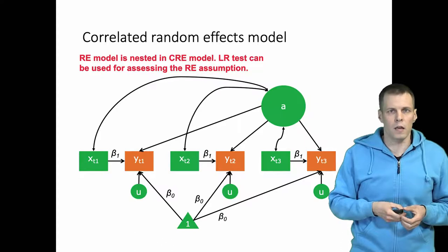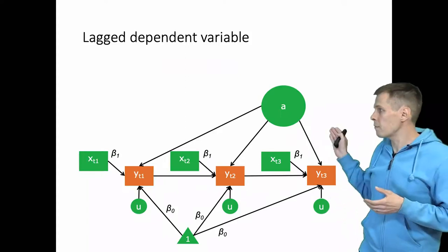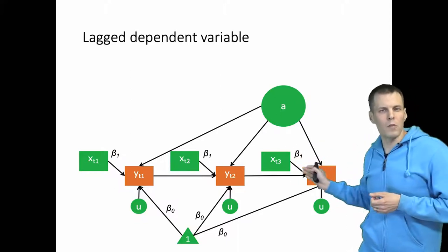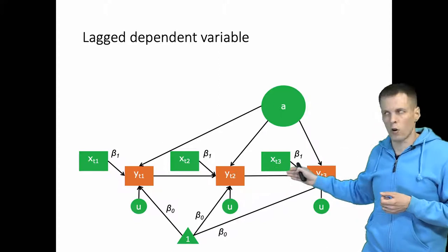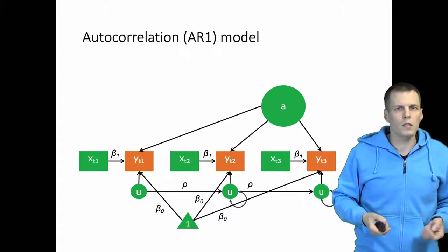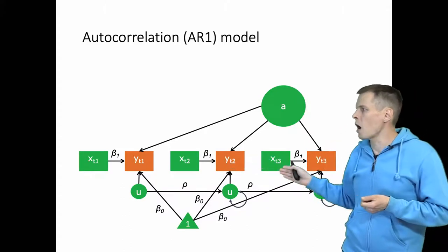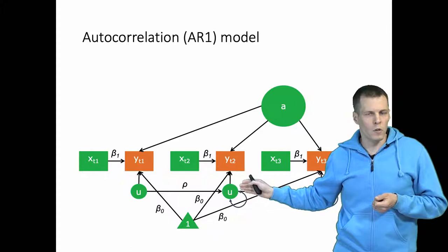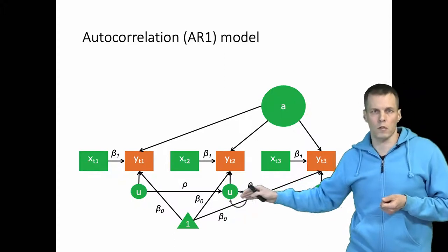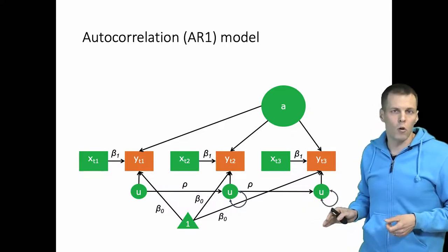We can also do more advanced models. For example, we can include lagged dependent variables, giving us a dynamic panel model where the Y's affect each other over time, the X's affect the Y's, and there is an unobserved effect. We can also do autocorrelated models, where instead of Y affecting Y over time, the error term at time 2 depends on the error at time 1, and time 3 depends on time 2. This is called autocorrelation, and it is very useful for modeling trending data.